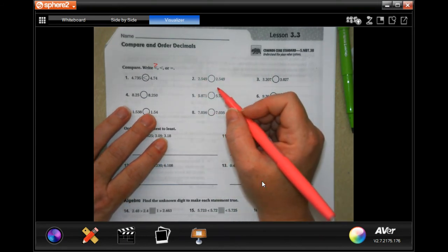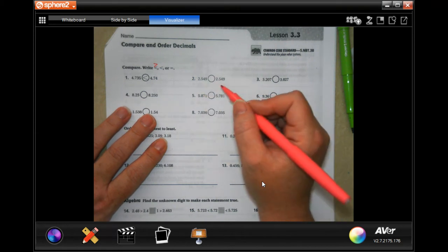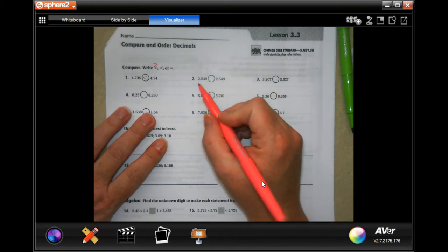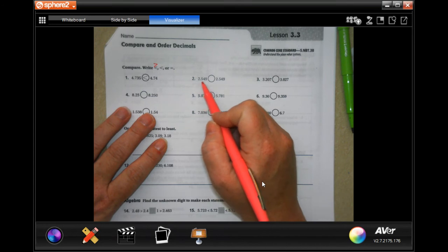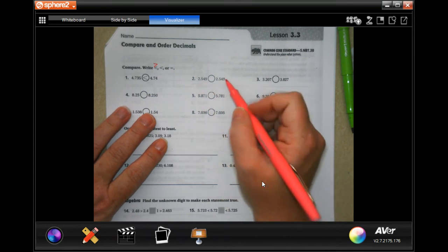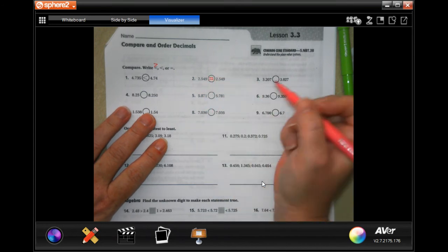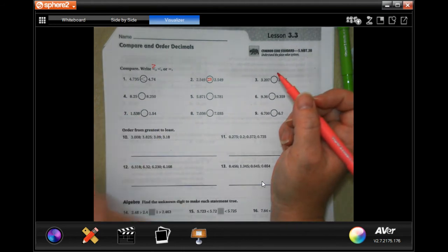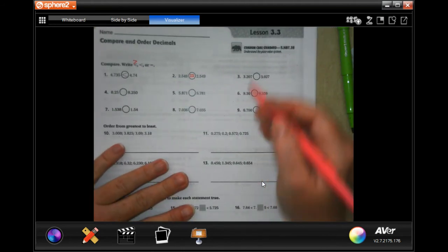It's kind of like ABC order where if the first letter is the same, you go to the next letter. Well, that's exactly what we're going to do. Now these ones, 2.549, 2.549, that one's going to be easy. They're exactly the same. That means they're equal.